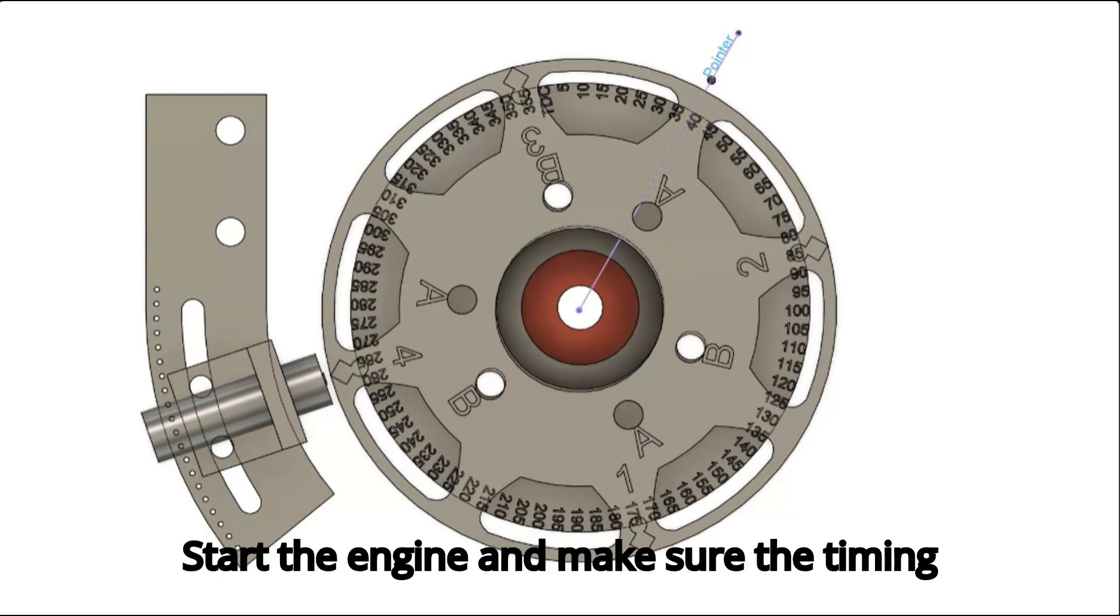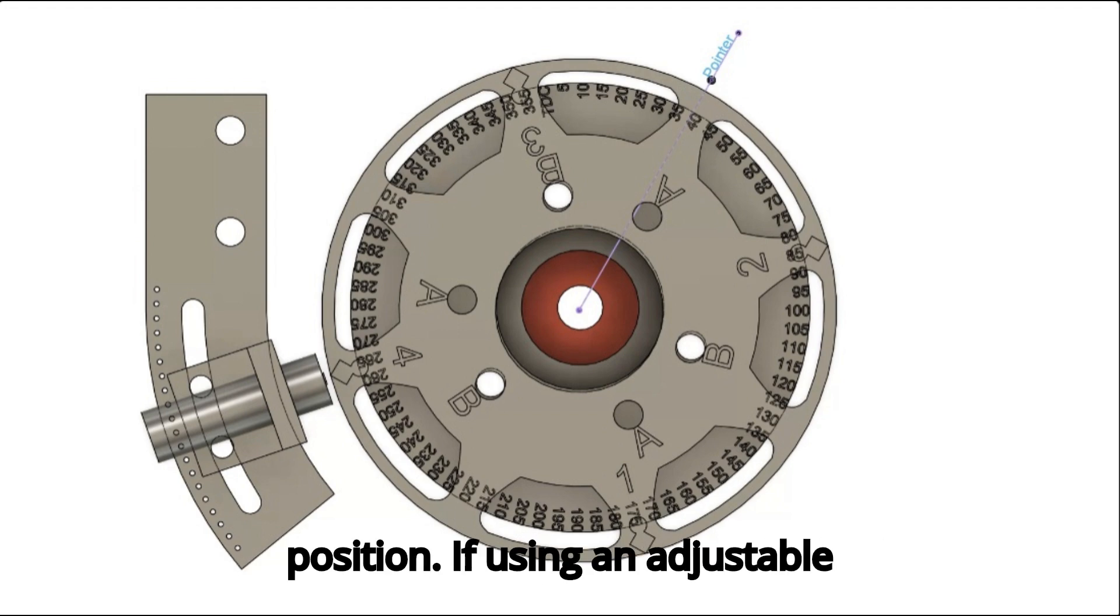Start the engine and make sure the timing and rotor phasing are at the desired position. If using an adjustable timing light, make sure the adjustment on the light is at zero.